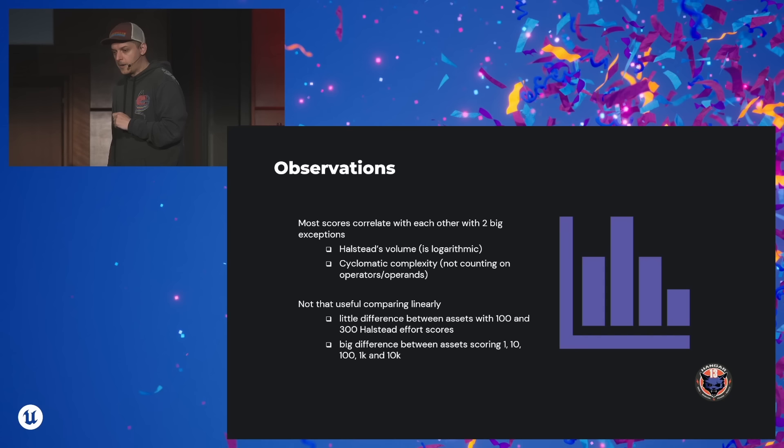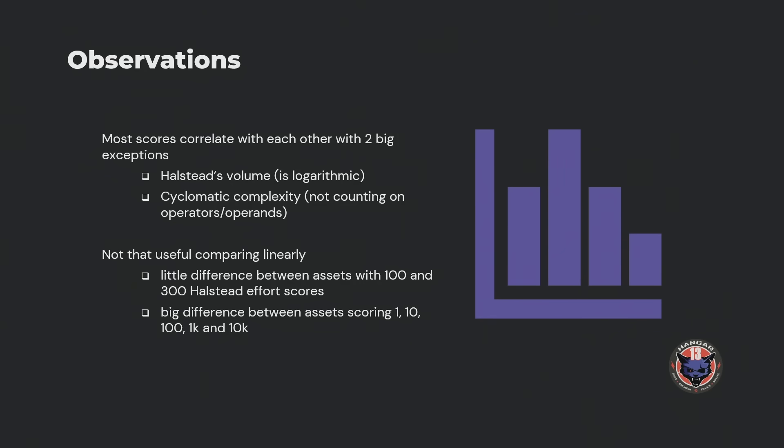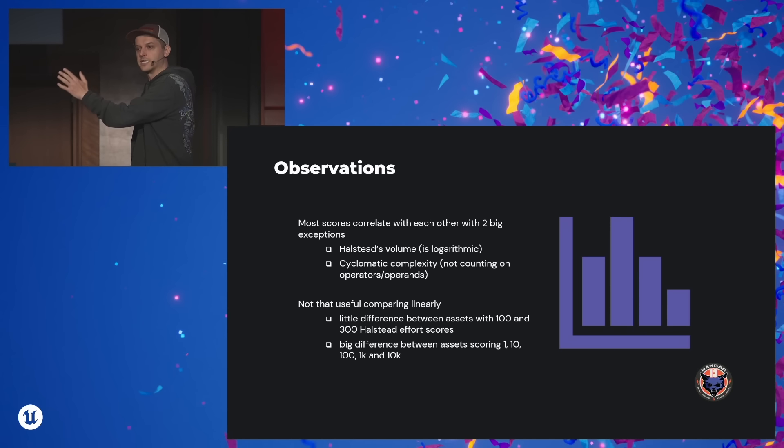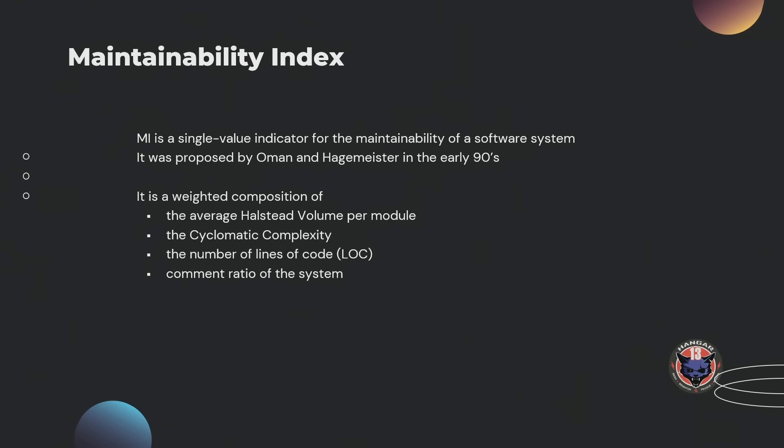Cyclomatic and Halstead — what are the observations so far? You can quickly plug the formulas from Wikipedia and calculate your blueprints. They kind of correlate with each other, apart from the Halstead volume being logarithmic and cyclomatic complexity being linear. When you have a bunch of blueprints and want to get an understanding, the linear scale isn't that great — the differences are small between small values, but there's a big difference between 1, 10, 100, 1K, 5K as it grows. We are not the first to have this problem. In the early 90s, Oman and Hagemeister were trying to find a better single-value indicator for the maintainability of a software system — literally called the maintainability index.